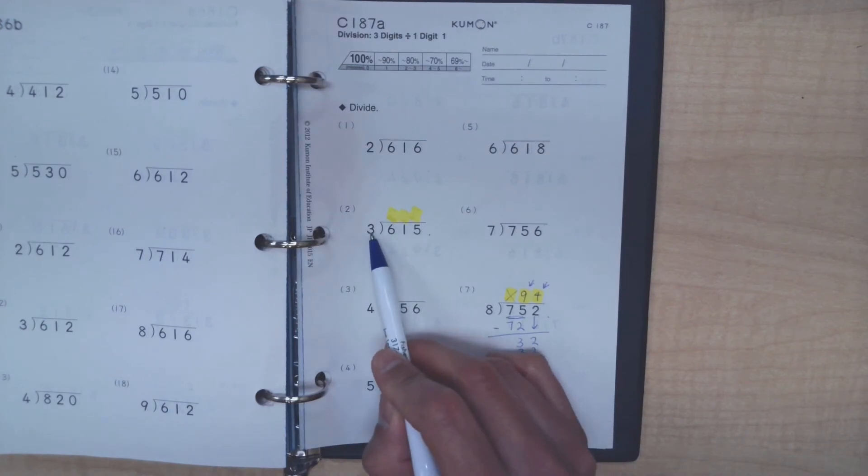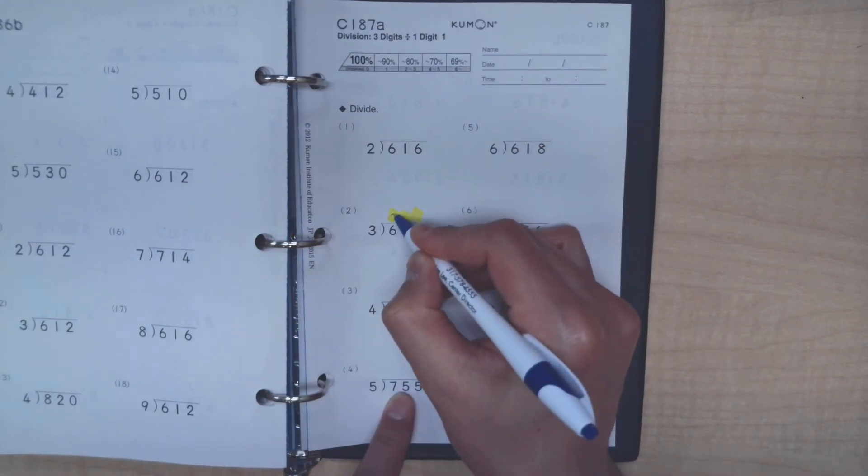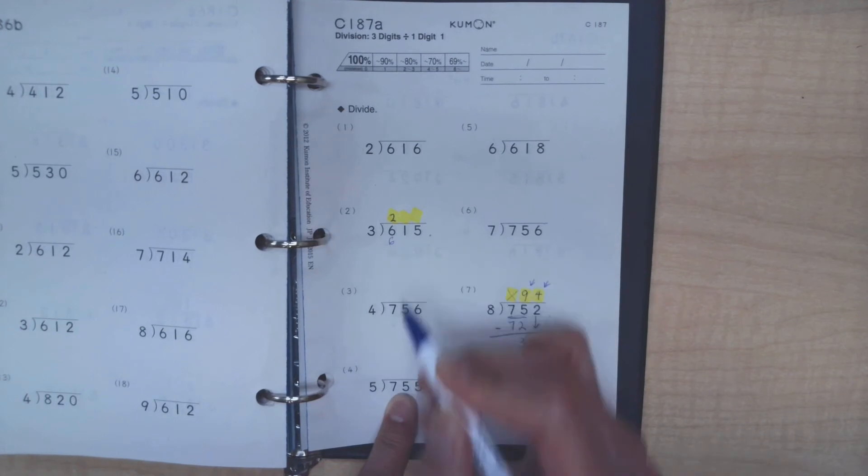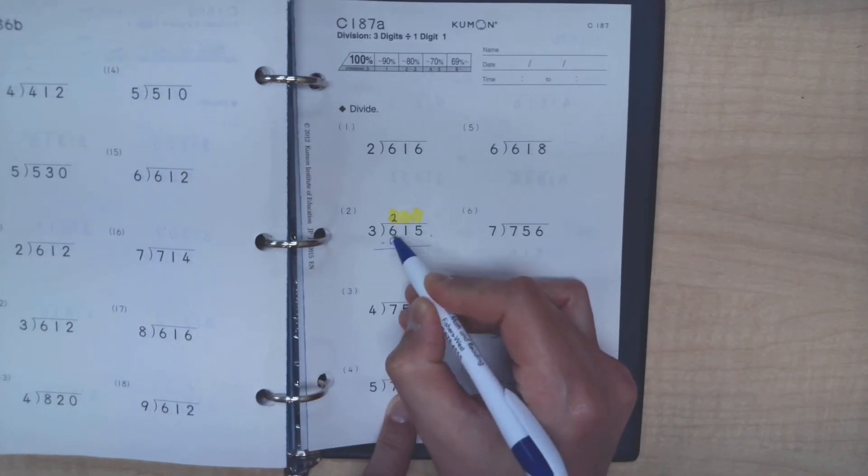How many times can the 3 go into a 6? In other words, what's 6 divided by 3? It's a clean 2, because 3 times 2 is 6. When we do our subtractions there, we know that 6 minus 6 is nothing.